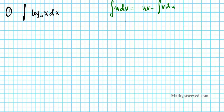To select the appropriate u, we use the LIPET rule. LIPET means: when selecting u, if you have a logarithm, select that first as u. If not, look for an inverse trig function, then a power function, then an exponential, then a trig function. Here we have a logarithm, so that automatically tells us our u is going to be the logarithmic function.